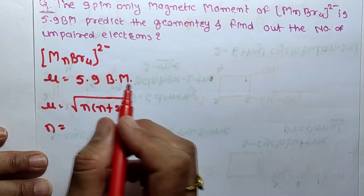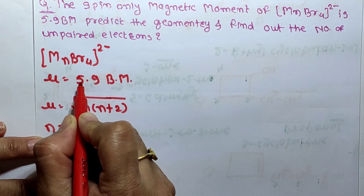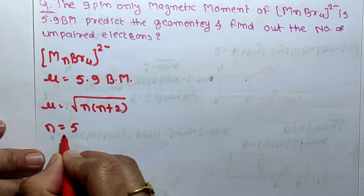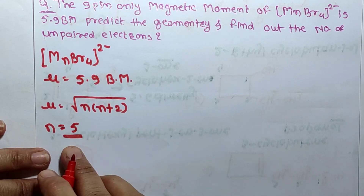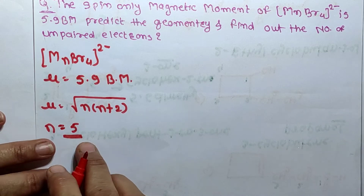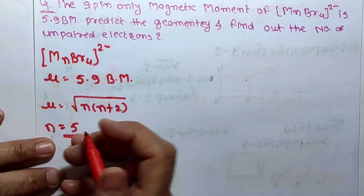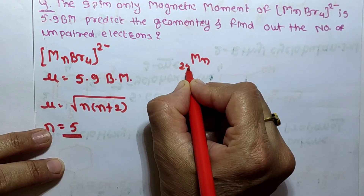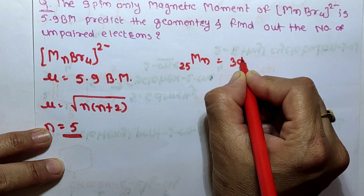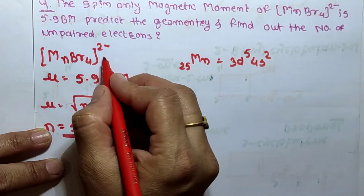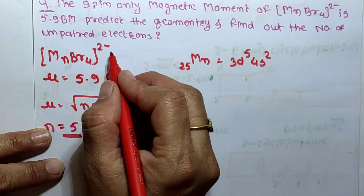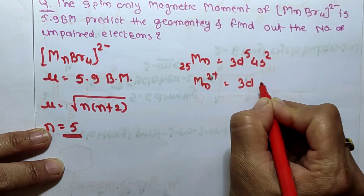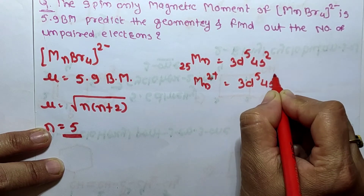Since the spin magnetic moment value is 5.9, the number of unpaired electrons is 5. To verify: Mn has atomic number 25, configuration [Ar] 3d⁵ 4s². In Mn²⁺ oxidation state (since the complex charge is 4 minus 2 = +2), the configuration is 3d⁵ 4s⁰.